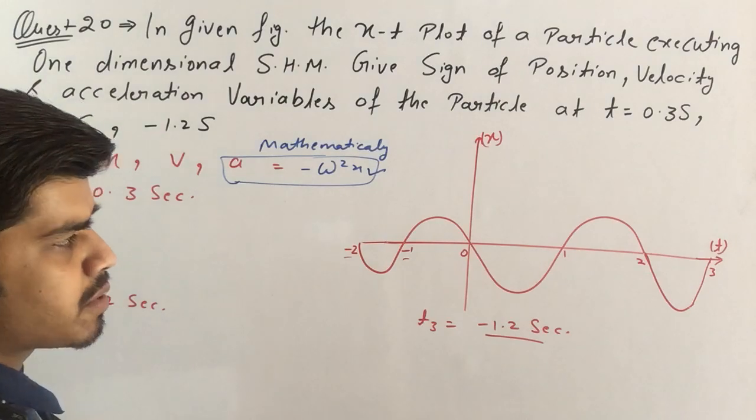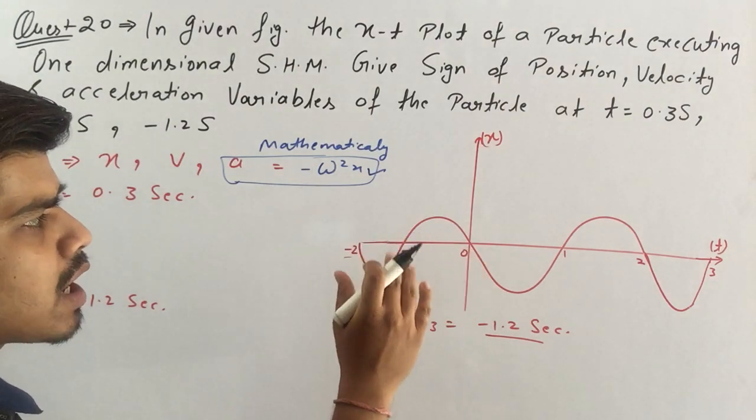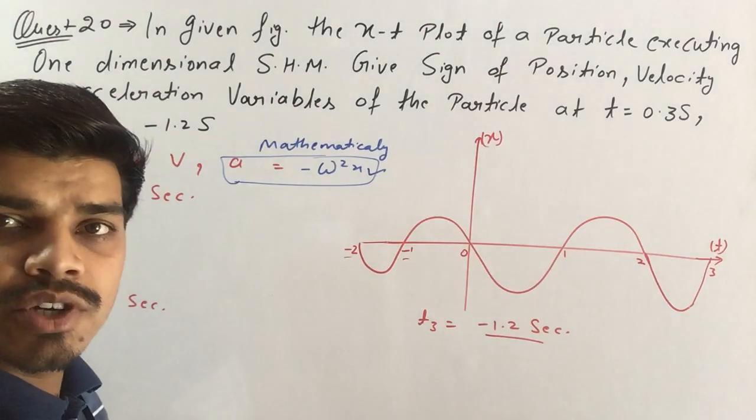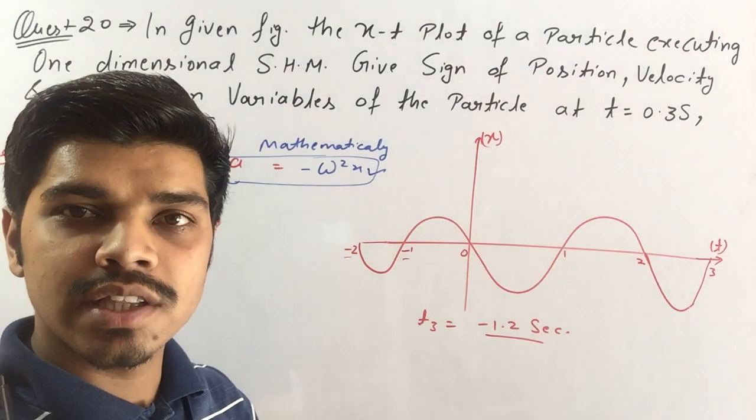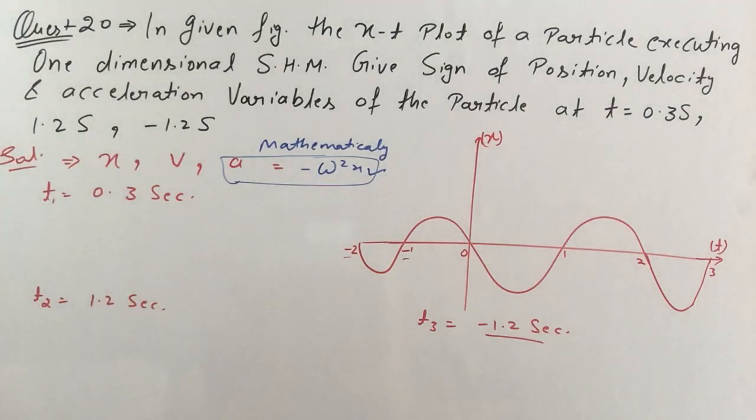Oscillation, wave and oscillation chapter. So students in that chapter we will learn that any simple harmonic motion equation is represented this way. And now as acceleration is minus omega square x.